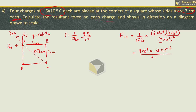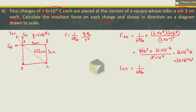The force F_AB equals 1 upon 4πε₀ into (6×10⁻⁸)² divided by (3×10⁻²)², which gives 36×10⁻³ Newton, or 3.6×10⁻² Newton. Similarly, the force on charge at A due to charge at D, F_AD, using the same formula and same distance, is also 3.6×10⁻² Newton.